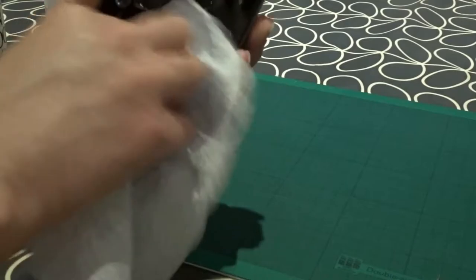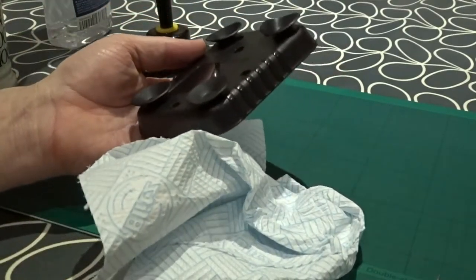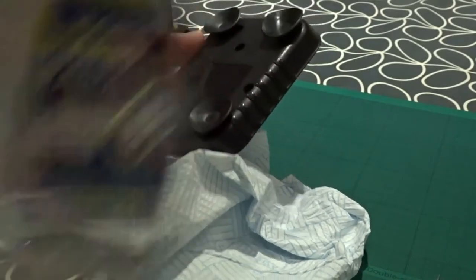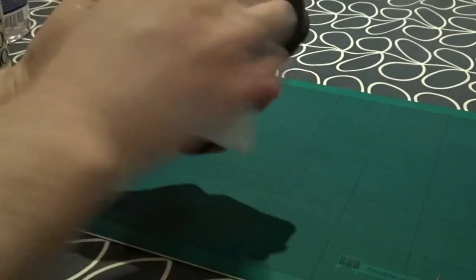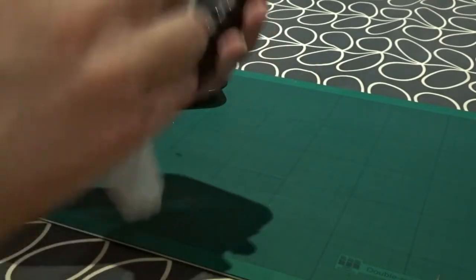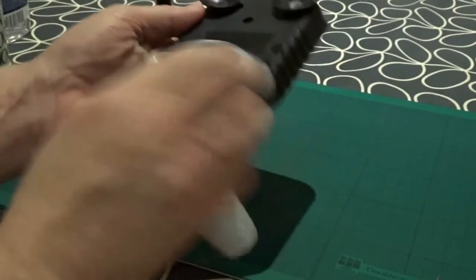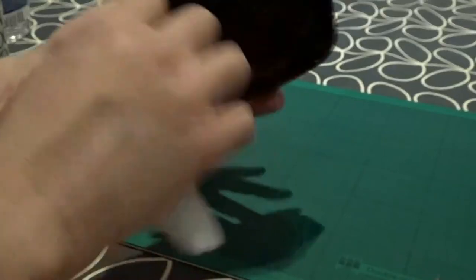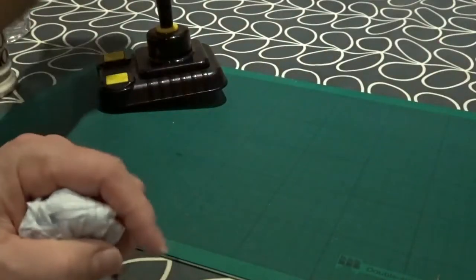So just again give that a good going round with this cloth. And then just give a little wipe over on the outside as well just to make sure it is all nice and clean. Again round behind those rubber suckers there just to make sure everything is all nice and clean. Yeah I think that will do and pop that to one side.